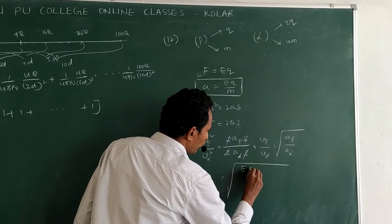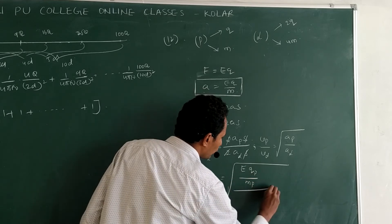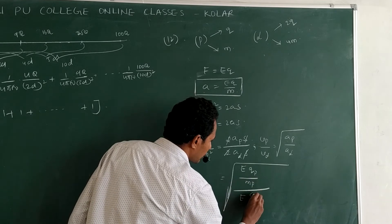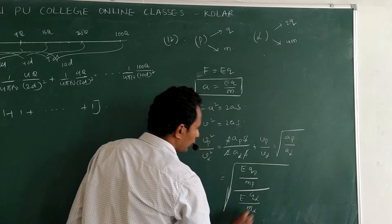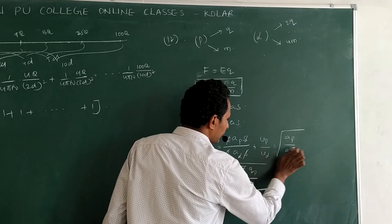Acceleration of proton, E, charge of proton Qp by mass of proton Mp by E charge of alpha by mass of alpha. There is the same electric field. This will be cancelled. Now this is equal to under root M alpha goes up. Charge quantity remains same.